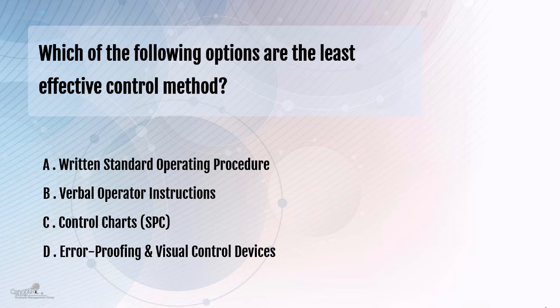If you cannot error proof it, then obviously the next option would be to establish statistical process control so you can eliminate any kind of defect well in advance before it actually becomes a defect. When within the control limit, you can find out the cause and eliminate it.